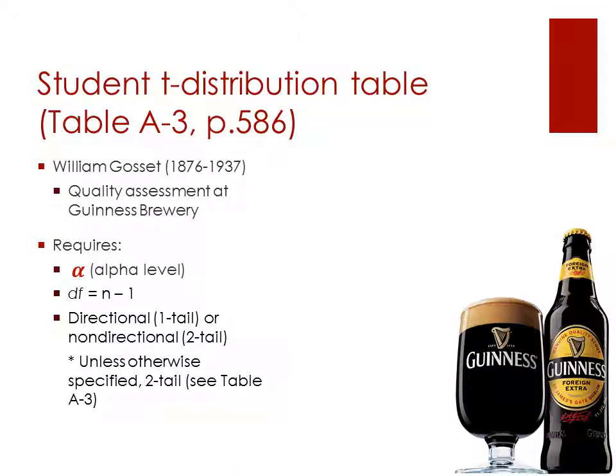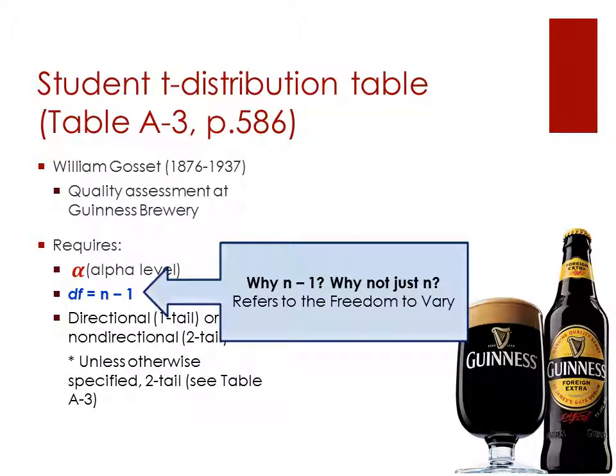Now, when we're looking at the student t-distribution, you're going to see that you need some different pieces of information to use the t-distribution table. It is laid out differently than the Z table. So, of course, we're going to need our alphas, our significance level. However, what we get different here is our degrees of freedom. So our degrees of freedom here is going to be df = n - 1.